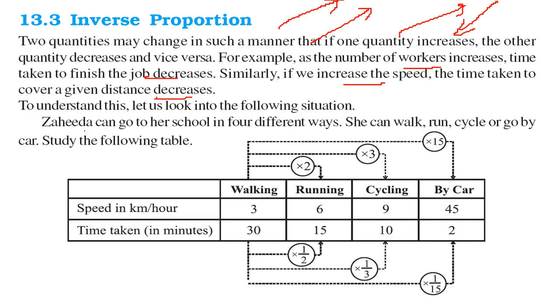Let us take an example. Zahida can go to her school in four different ways. She can walk, she can run, she can cycle, she can go by a car. So the speed of all these ways are given here in km per hour. 3 km per hour, 6 km per hour, 9, 45. So as the speed increases, the time decreases.